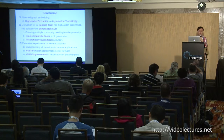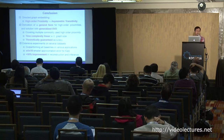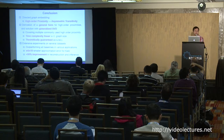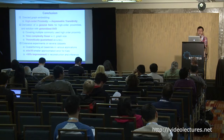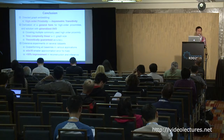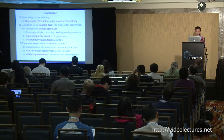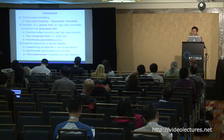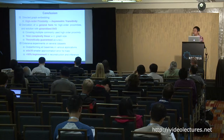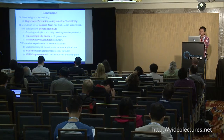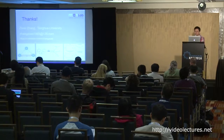To summarize: we propose using high-order proximity to solve the challenging problem of asymmetric transitivity in directed graph embedding. We derive a general form covering multiple commonly used high-order proximities, which enables the use of generalized SVD — linear with respect to graph size and with theoretically guaranteed accuracy. We also conducted experiments on one synthetic and three real-world datasets, proving that our algorithm HOPE consistently and significantly outperforms all state-of-the-art baselines, with large improvements in some tasks. Thank you for listening.